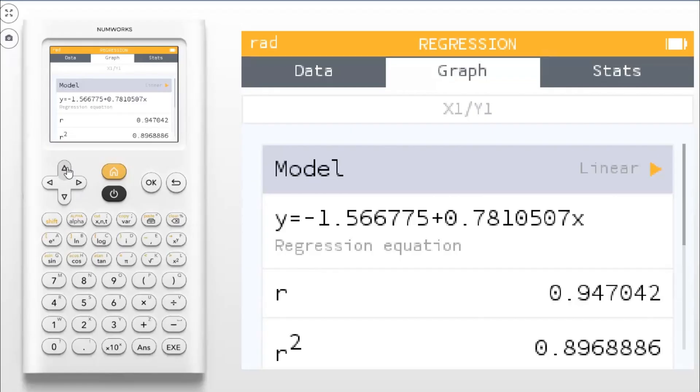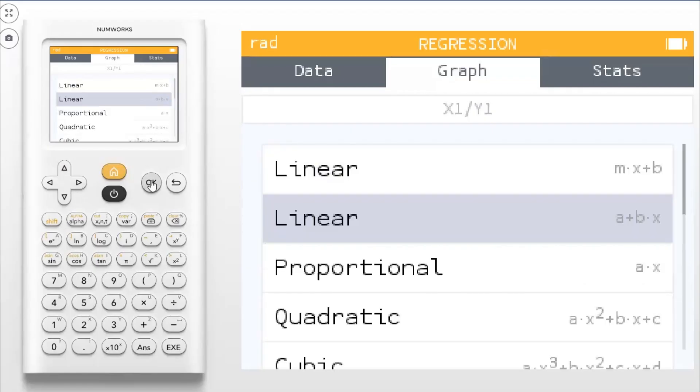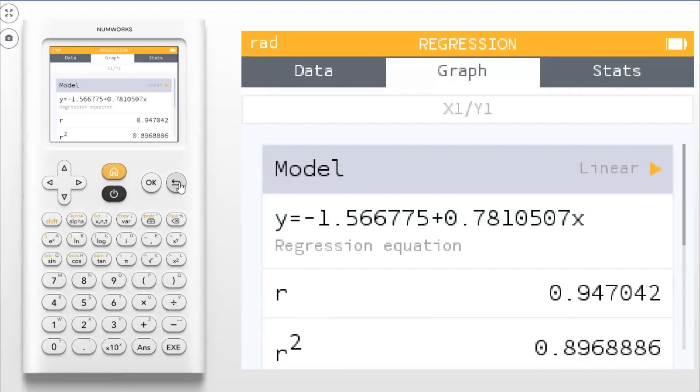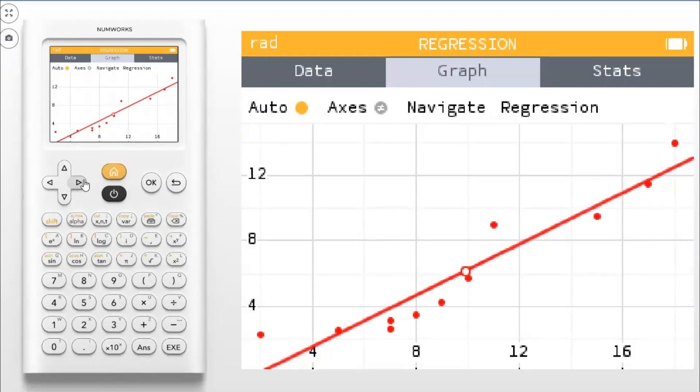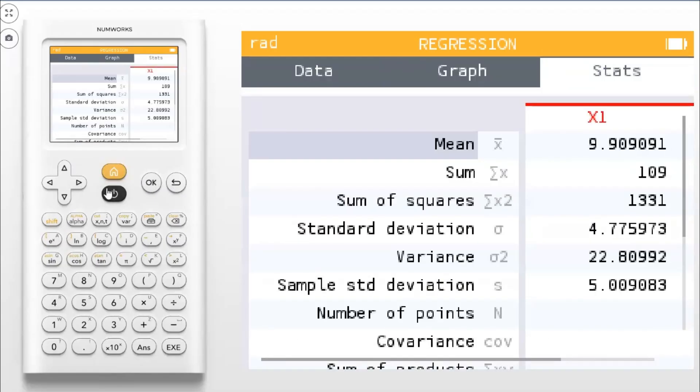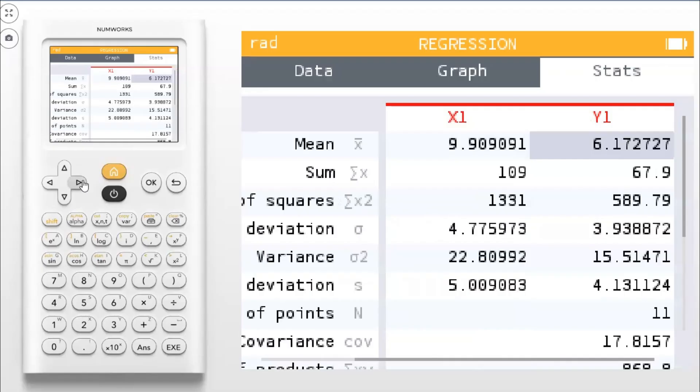And then you can even go up to the stats tab at the top. And it'll give you the statistics for all of the data you entered for both the X's and the Y's, means, standard deviations, and all that kind of fun stuff.